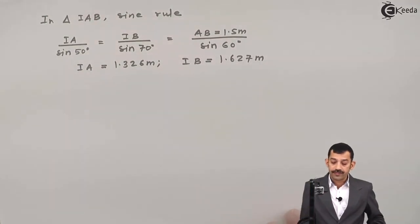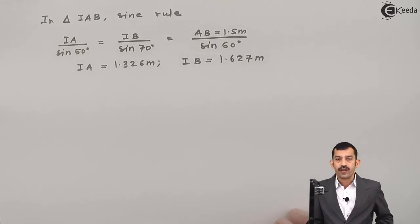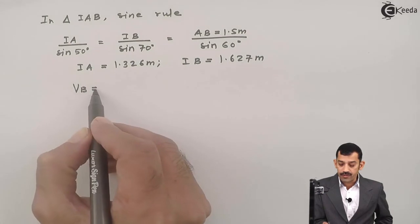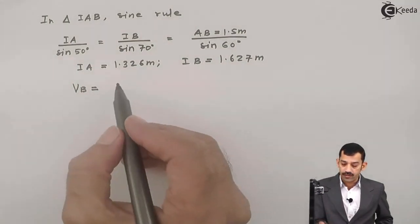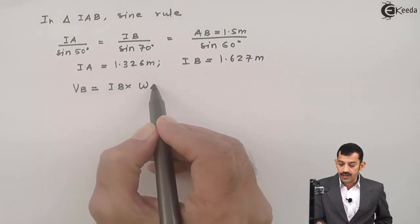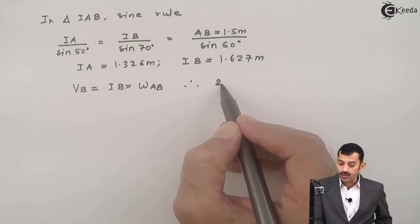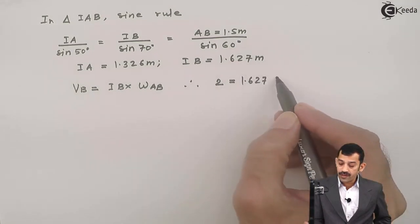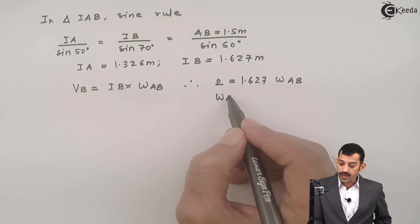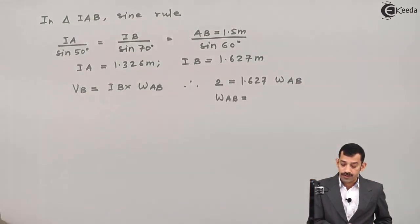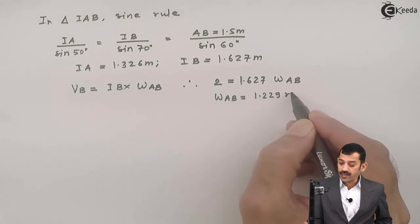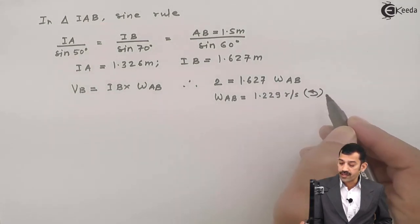Now that IA and IB are known, we apply V equals R·ω. Using velocity of collar B: VB equals IB times ω_AB, so 2 equals 1.627 times ω_AB. Therefore, ω_AB equals 2 divided by 1.627, which gives 1.229 radians per second, and the direction of ω is anticlockwise. This is our first answer.